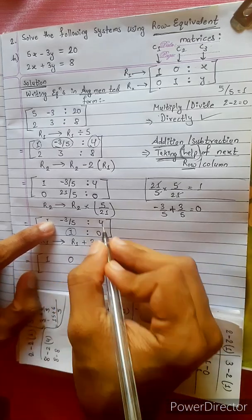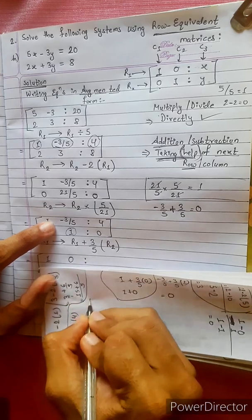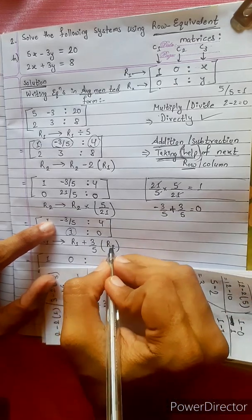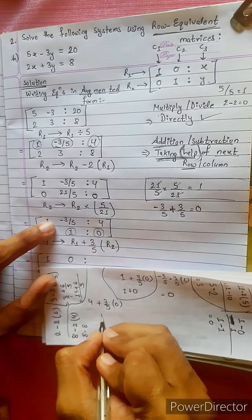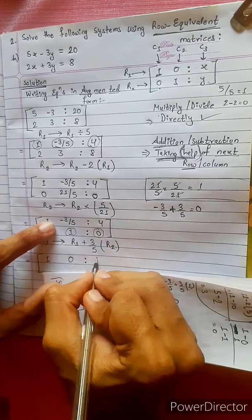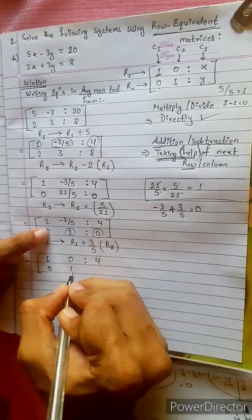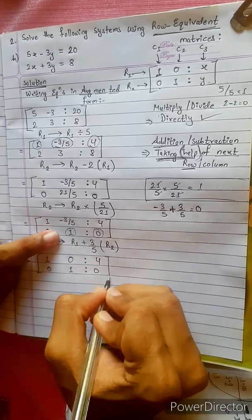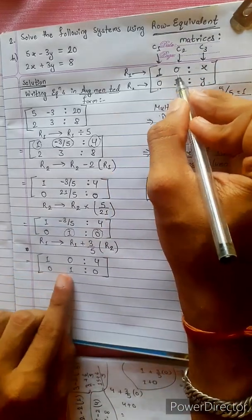R2 gives 4. So we compute: 4 plus 3 by 5 times R2. Since R2's second entry is 1 and others are 0, the result simplifies. Comparing with the identity matrix form [1, 0 / 0, 1], we now have the reduced row echelon form.